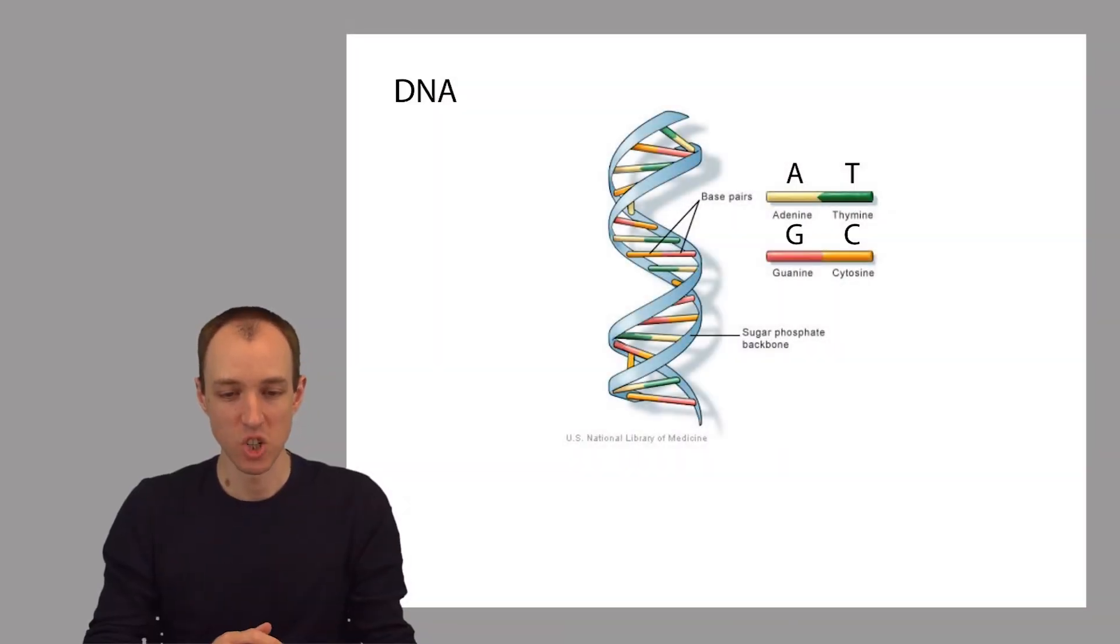A DNA molecule is shaped like a double helix, this thing that looks like a twisted ladder. And the rungs of this ladder are made up of pairs of bases.